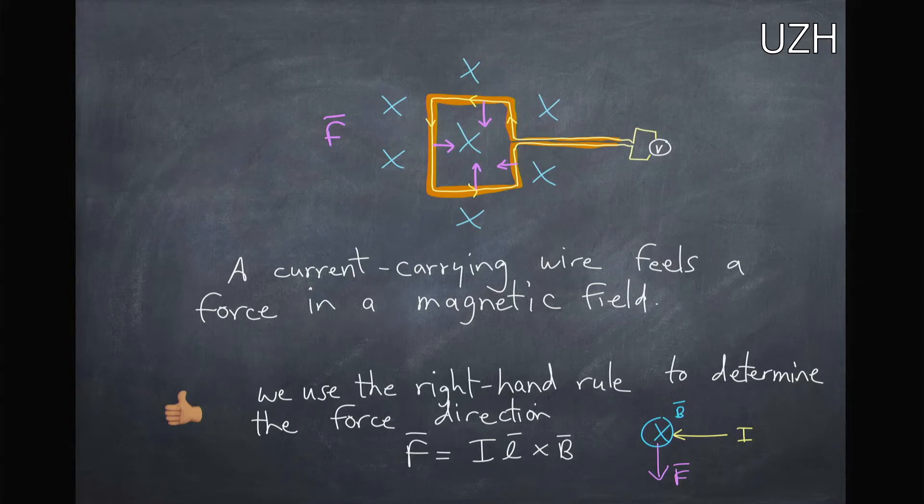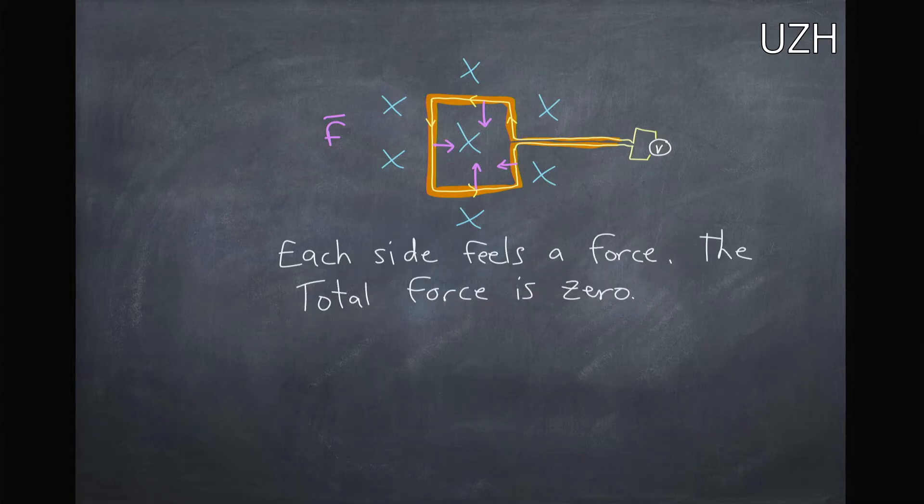And this is just the formula for this force which is the current times the distance crossed with the magnetic field. So each side is going to feel a force, the total force if we add them up would be zero.